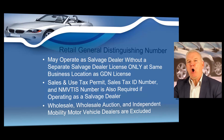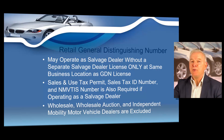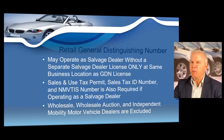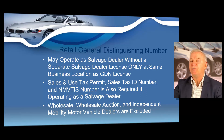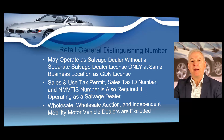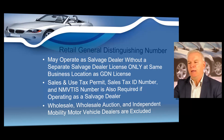All independent motor vehicle GDN license types — with the exception of wholesale, wholesale auction, and independent mobility motor vehicle dealers — may operate as a salvage dealer as of September 1st, 2019, without a separate salvage license, as long as it is only at the same business location for which the dealer license was issued. A sales and use tax permit, a sales tax ID, and a national motor vehicle title information system number would also be required if operating as a salvage dealer. Wholesale, wholesale auction, and independent mobility motor vehicle dealers are excluded from this provision.